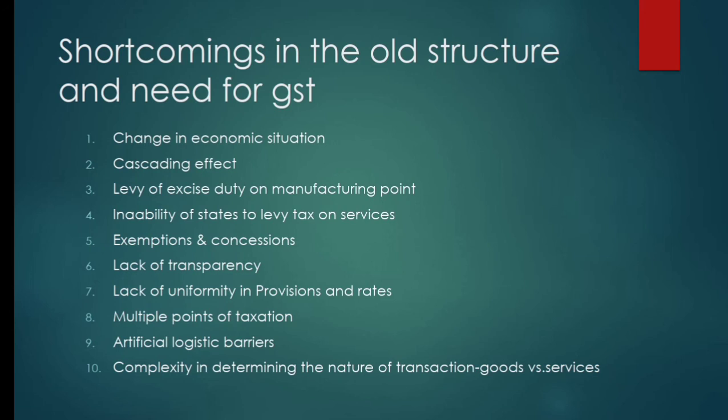States had no freedom to levy any service tax, due to which the revenue of states remained very low. The fifth shortcoming is exemptions and concessions — under the current system, businesses enjoyed many kinds of exemptions and concessions under different levies which broke the chain of VAT and created distortions. Different areas had different exemptions and concessions, due to which a single uniform tax base could not be decided — some states got more benefit, some got less, which was a shortcoming of the old taxation structure.